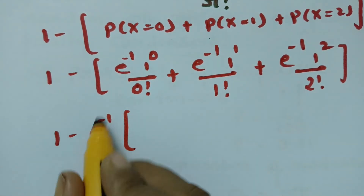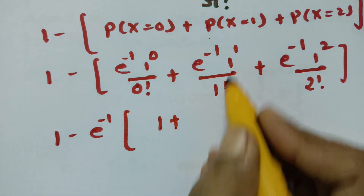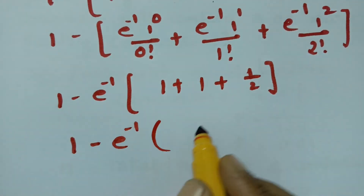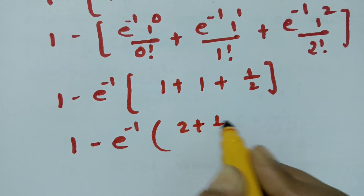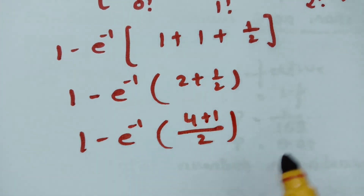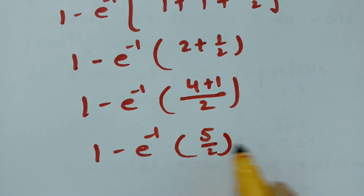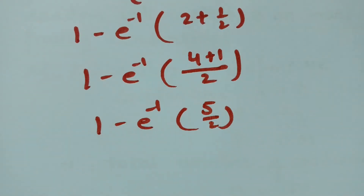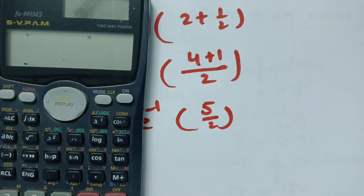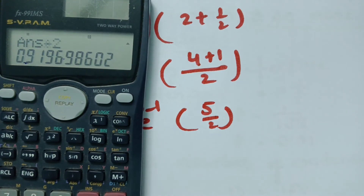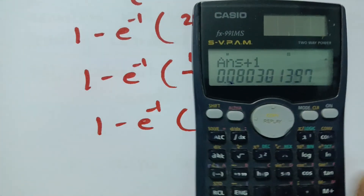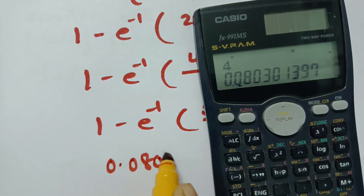Taking e to the power minus 1 common, this is 1 plus 1 plus 1/2. So this value is 1 minus e inverse into, taking LCM of 2, this becomes 4 plus 1, giving 1 minus e inverse times 5/2. Calculating this value gives 0.0803.